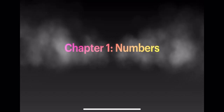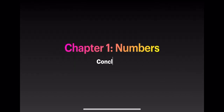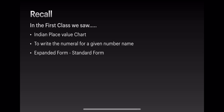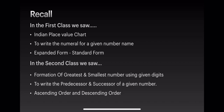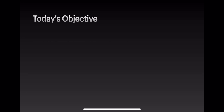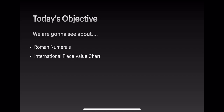Welcome back students to the final part of chapter 1 - Numbers. Recall: in the first class we saw the objectives, Indian place value chart, writing numerals for a given number name, expanded form, and standard form. In the second class we saw formation of greatest and smallest numbers using given digits, predecessor and successor, ascending order and descending order. Today's objectives are Roman numerals and the international place value chart.